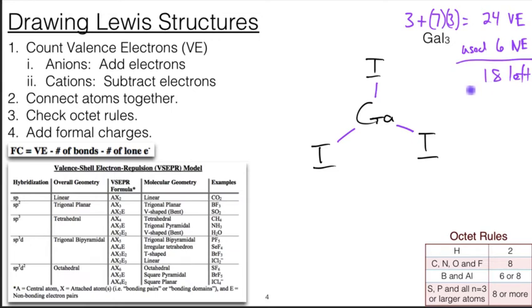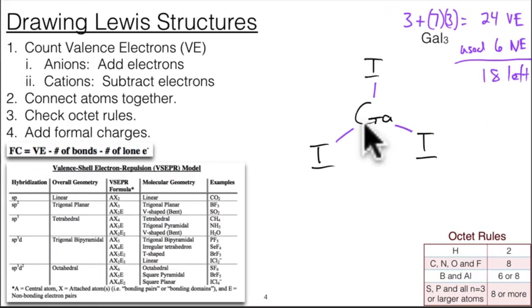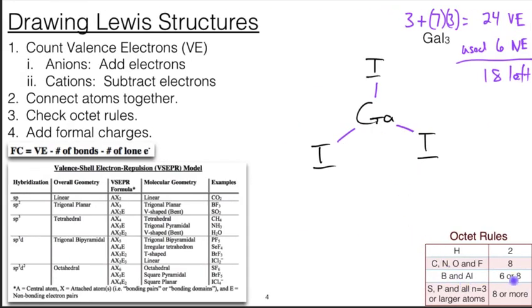Now with respect to octet rule, gallium and iodine, these elements are not on the periodic table here. What you have to realize is that you can use the periodic trends to know what the basic octet rules are for all the other elements. What I mean by that is, we just saw this a second ago, gallium, which family is it in? It's in the family with boron and aluminum.